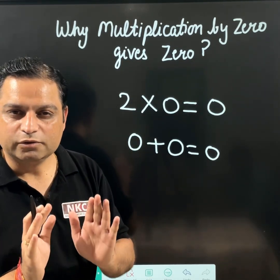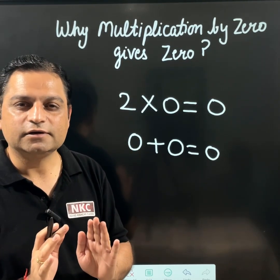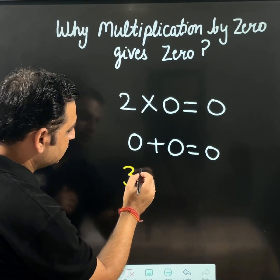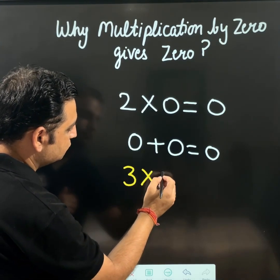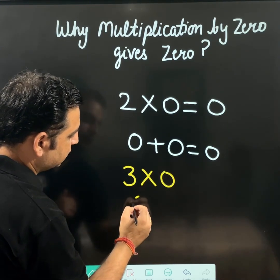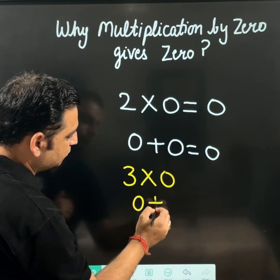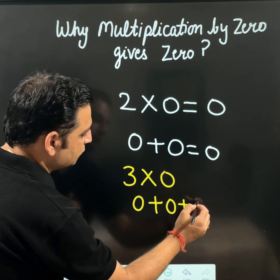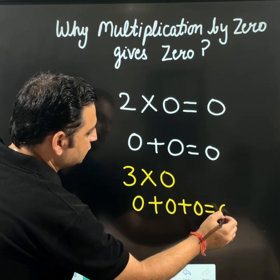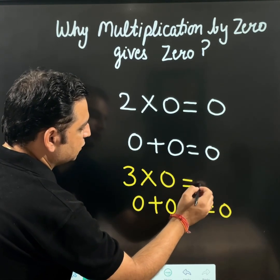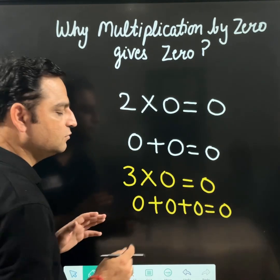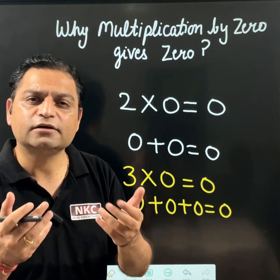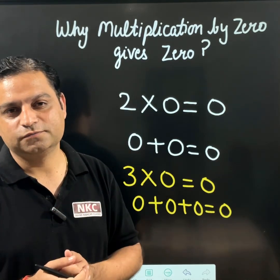I hope you are clear with the concept. Same way, if it is 3 times 0, that means 0 plus 0 plus 0. Since this is 0, so 3 times 0 is also 0. So there should not be any confusion now.